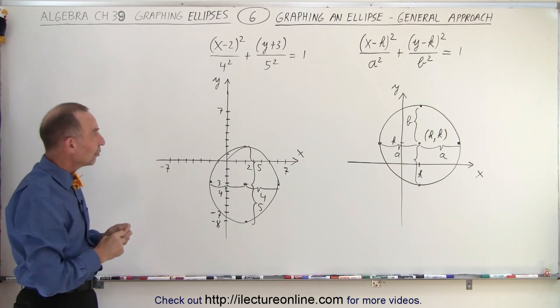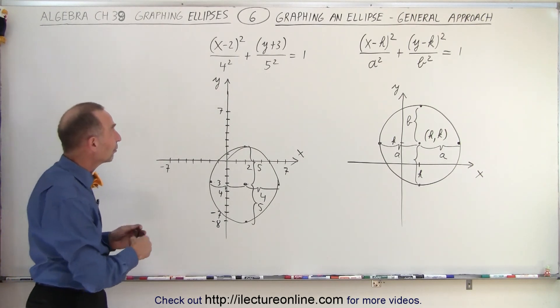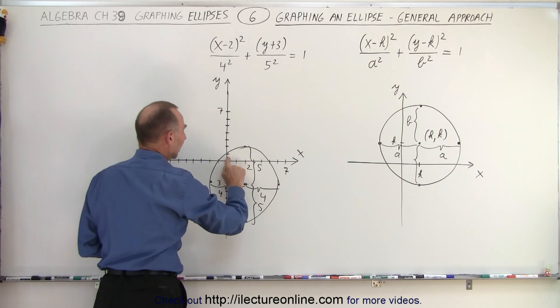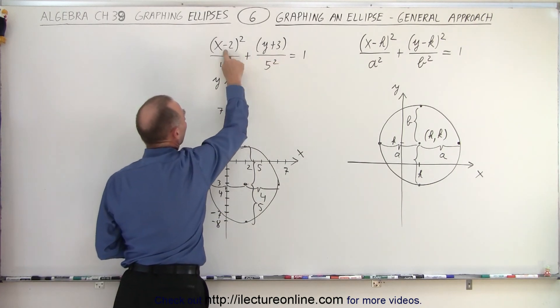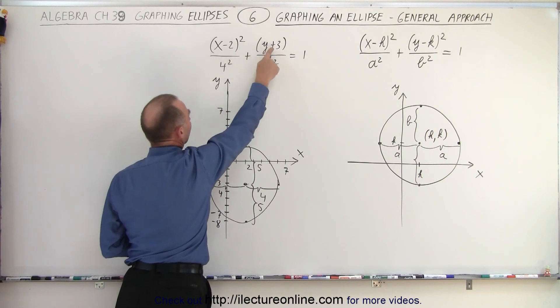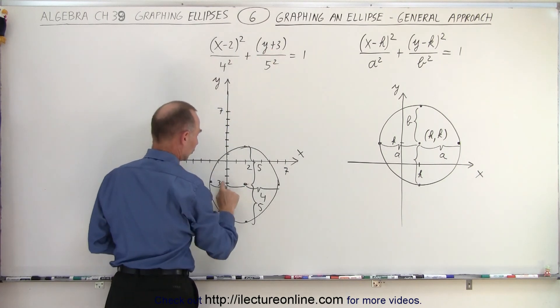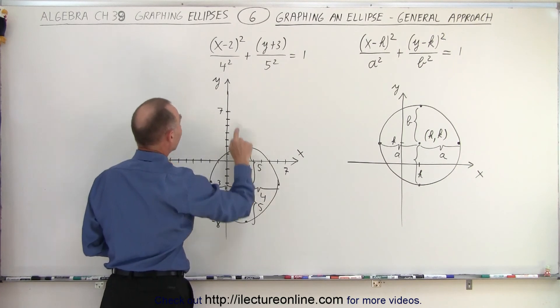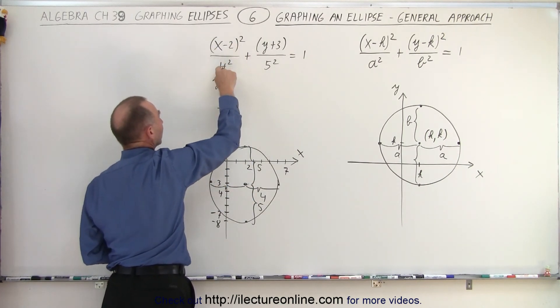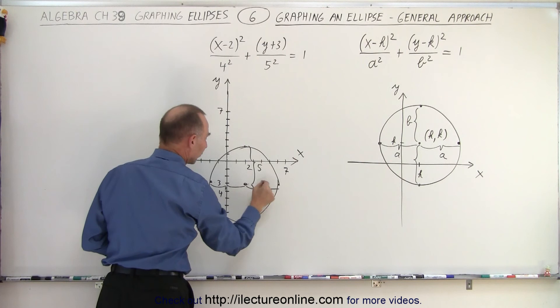And again, that's how we use the general equation in this particular format to go ahead and graph the ellipse. First, we find the central point offset by two to the right and three down. So two to the right and three down. That's the central point of the ellipse. Then we look at the number associated with x. It's a four. So we go to the right four, to the left four.